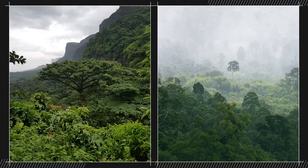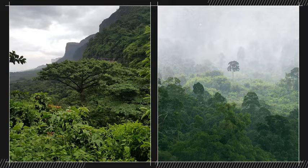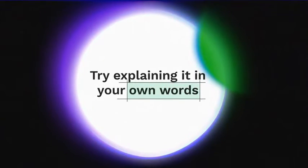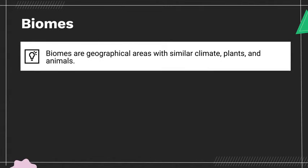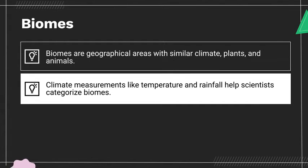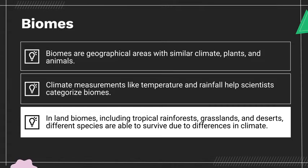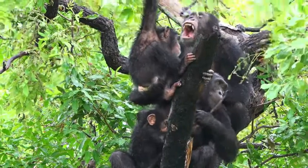Remember, places with similar climate, plants, and animals are categorized as part of the same biome, even if they're found in completely different places on Earth. Now try explaining it in your own words — what are biomes? Here are the important takeaways: Biomes are geographical areas with similar climate, plants, and animals. Climate measurements like temperature and rainfall help scientists categorize biomes. And in land biomes — including tropical rainforests, grasslands, and deserts — different species are able to survive due to differences in climate. This is a great start, but there's always more to illuminate. What questions do you still have about biomes?